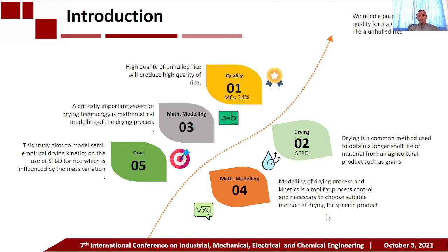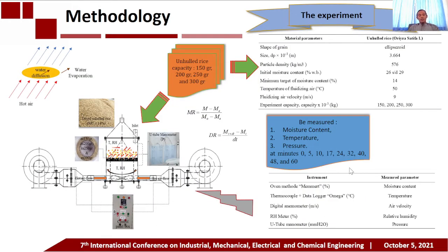For methodology, in this research we used a swirling fluidized bed dryer unit at laboratory scale. The experiment used unharvested rice with specifications: shape ellipsoid, size 3.664 millimeters, particle density 576, and initial moisture content of about 26 to 29 percent on a wet weight basis. The target final moisture content is 14 percent, achieved using the swirling dryer at 50 degrees Celsius.